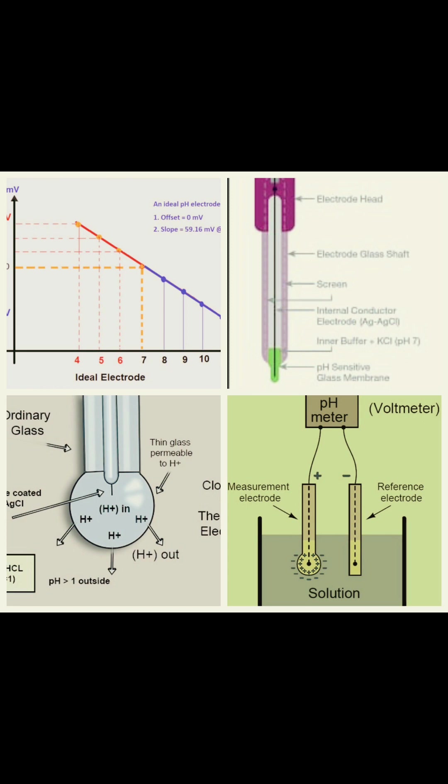However, they cannot function without one another. A pH meter consists of three parts: a pH probe, you can see in the diagram, a reference electrode, and the pH meter itself. It is the electrode inside a pH probe that measures the pH of solutions. To measure the pH of a solution, the electrodes at the probe are dipped into the test solution.